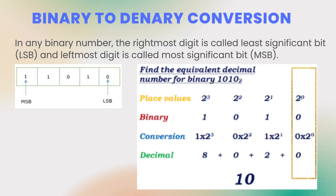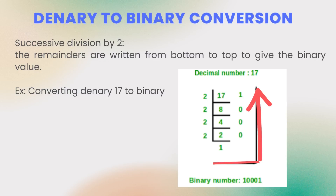Now let's look at how we convert decimal to binary. When given a decimal number — in this example, converting denary 17 to binary — we keep dividing by 2 and write the remainders from bottom to top to get the final binary value. 17 divided by 2 is 8 remainder 1; 8 divided by 2 is 4 remainder 0; 4 divided by 2 is 2 remainder 0; 2 divided by 2 is 1 remainder 0; 1 divided by 2 is 0 remainder 1. Reading the remainders from bottom to top gives 10001, so the binary number for decimal 17 is 10001. Always remember to write all remainders from bottom to top.